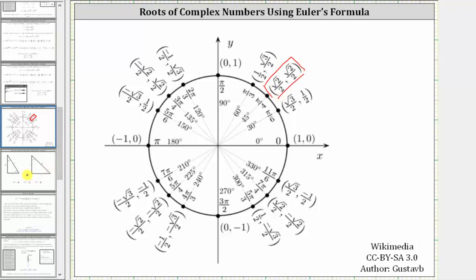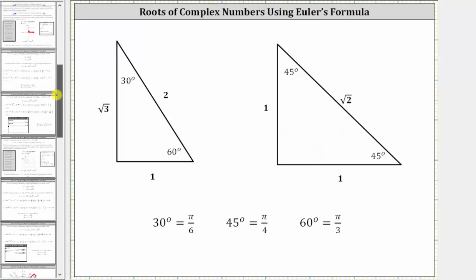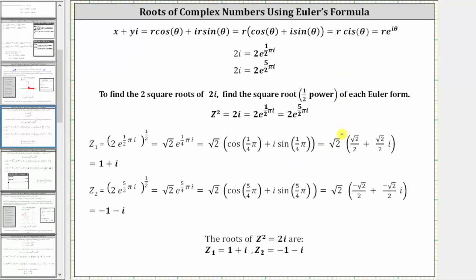We can also find these trig function values using the 45-45-90 reference triangle. The last step is to distribute square root two. Since square root two times square root two equals two, and two divided by two equals one, this product simplifies to one plus i, which is the first root or first complex solution.